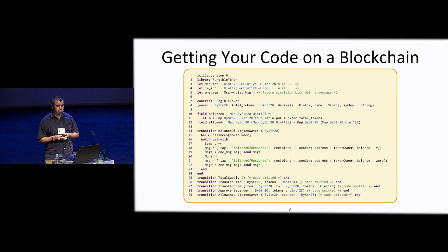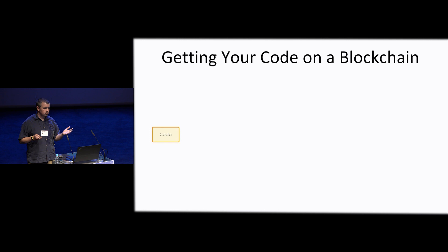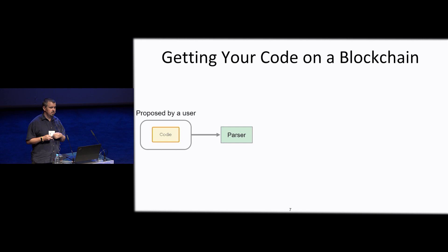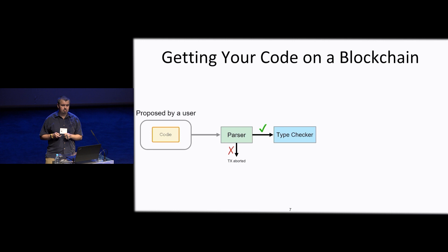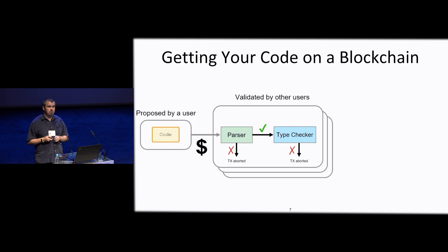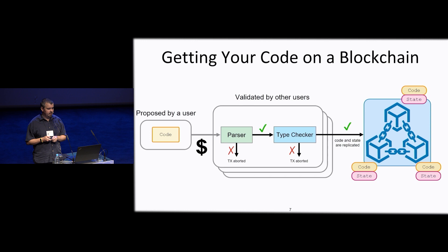You just package your code as a module with a state and a function, which is usually called a smart contract. Then you make a proposal to the quorum in the system in the form of a transaction. Before you propose this code to be massively replicated, you do your diligence — you run the parser, make sure the program parses, do the type checking, and also allocate some amount of virtual currency to compensate other parties who will be replicating the same process of validation.